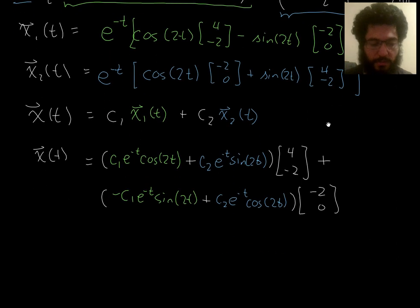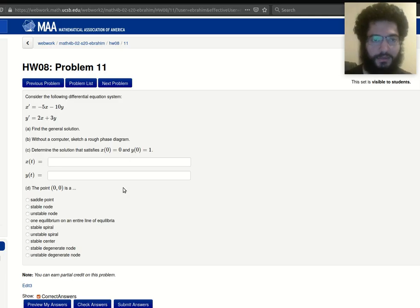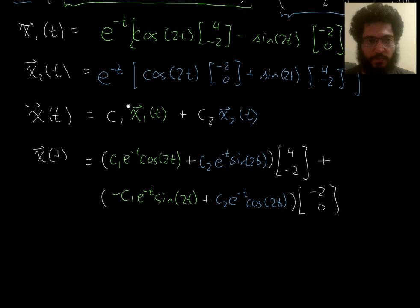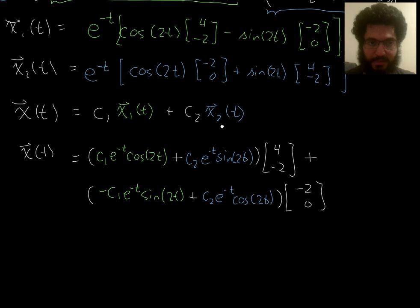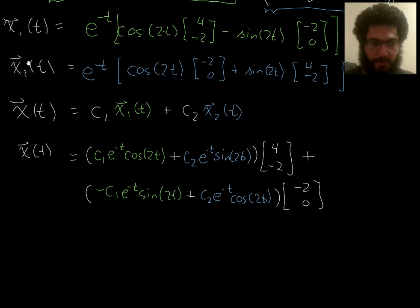So we were working on an example, this example that I stole from homework problem 11, and we had gotten our general solution. So we got these two linearly independent solutions, x1 and x2, and then we wrote our general solution in two different ways, just grouping the terms in different ways. You just use whichever grouping is most convenient for whatever you're doing. So here we're grouping things based on what has a c1 and what has a c2 in front of it.